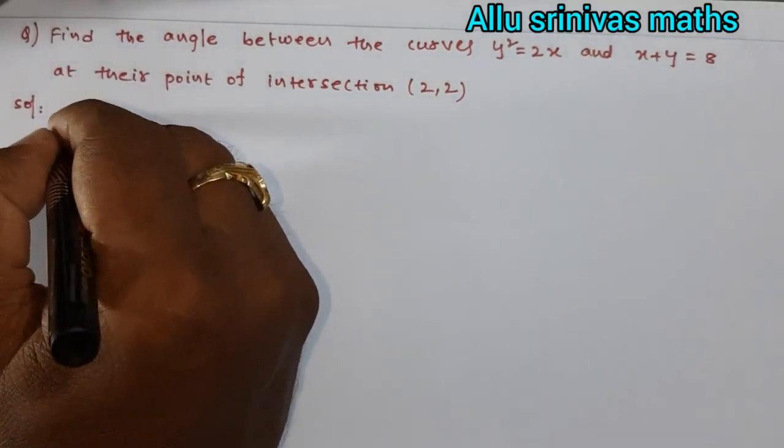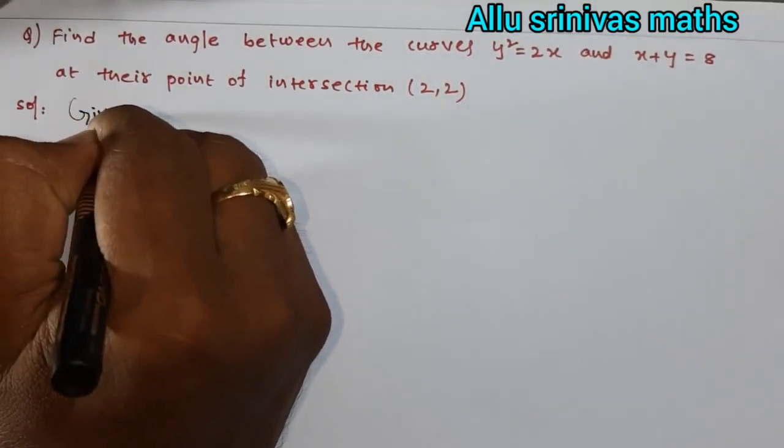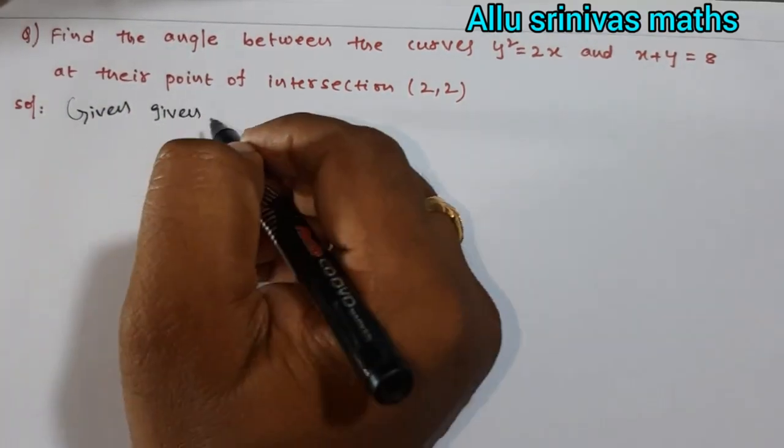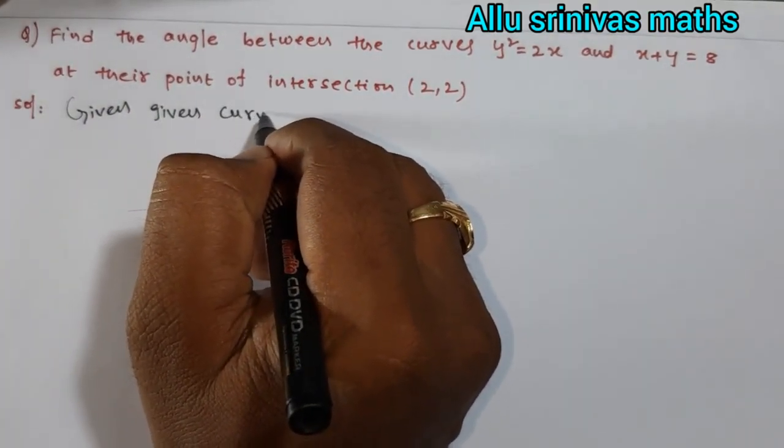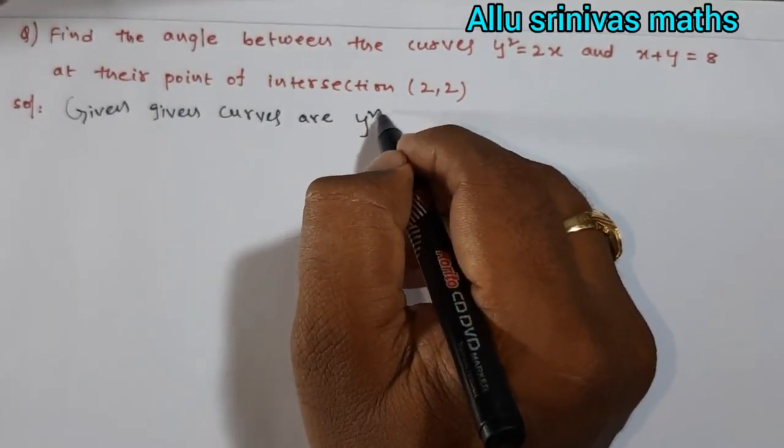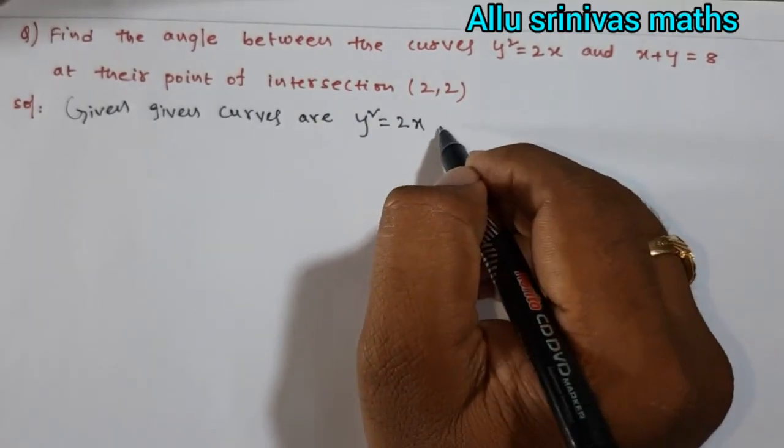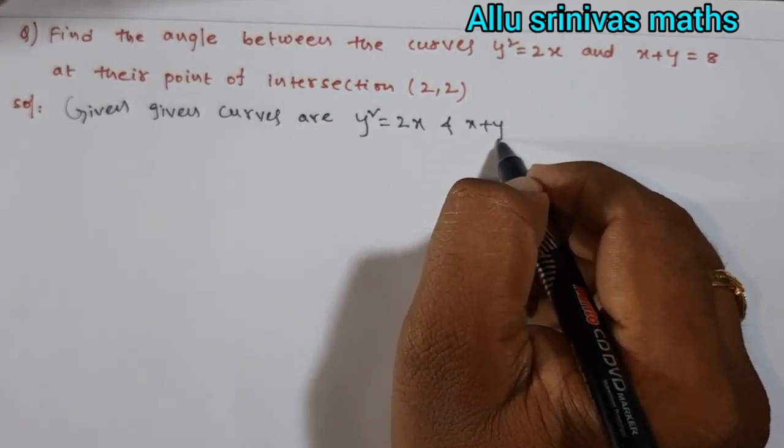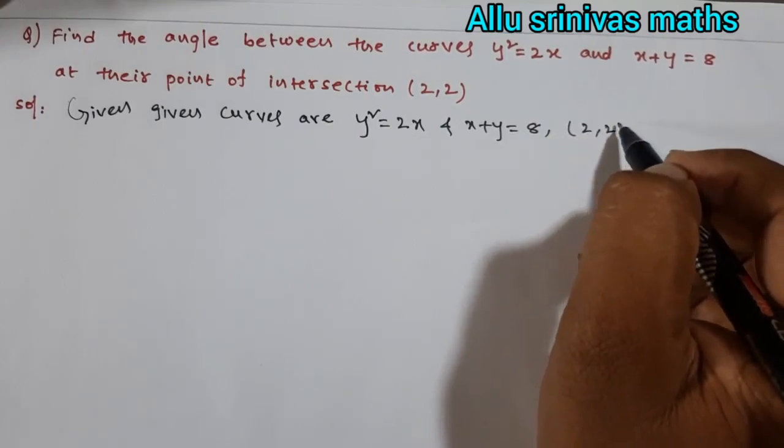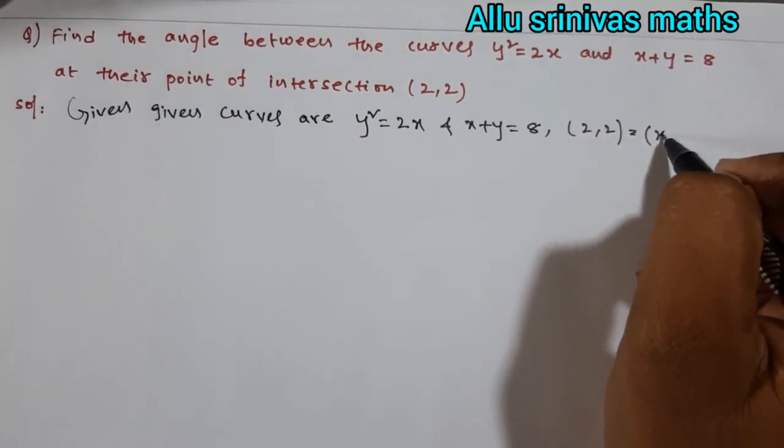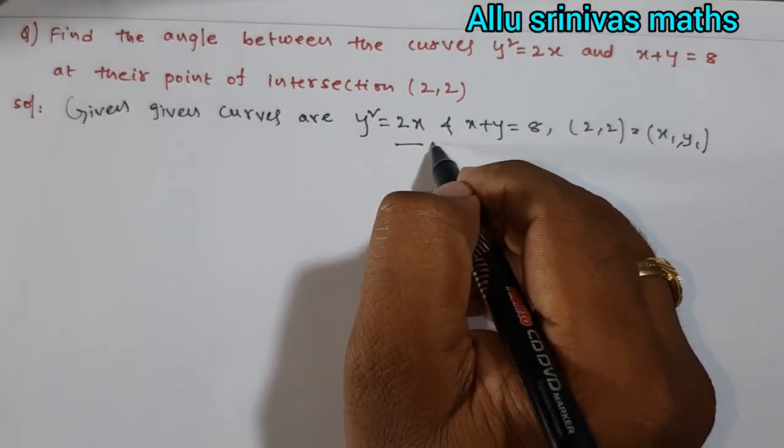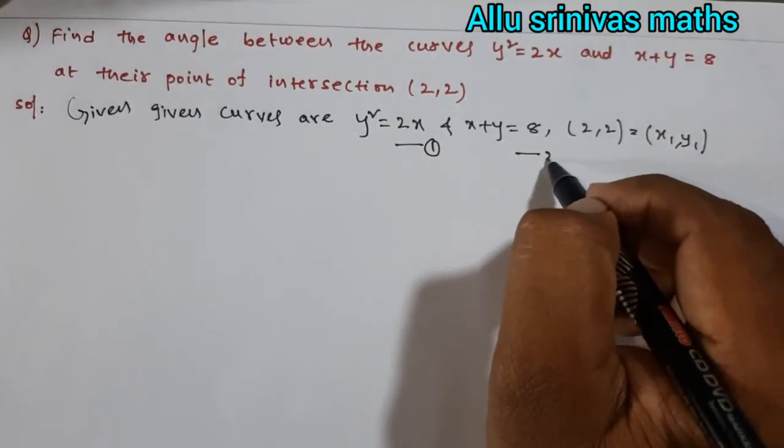First we have to write the given curves: y² = 2x and x + y = 8 at the given point (2, 2) compared to (x₁, y₁). This is called equation 1 and this is called equation 2.